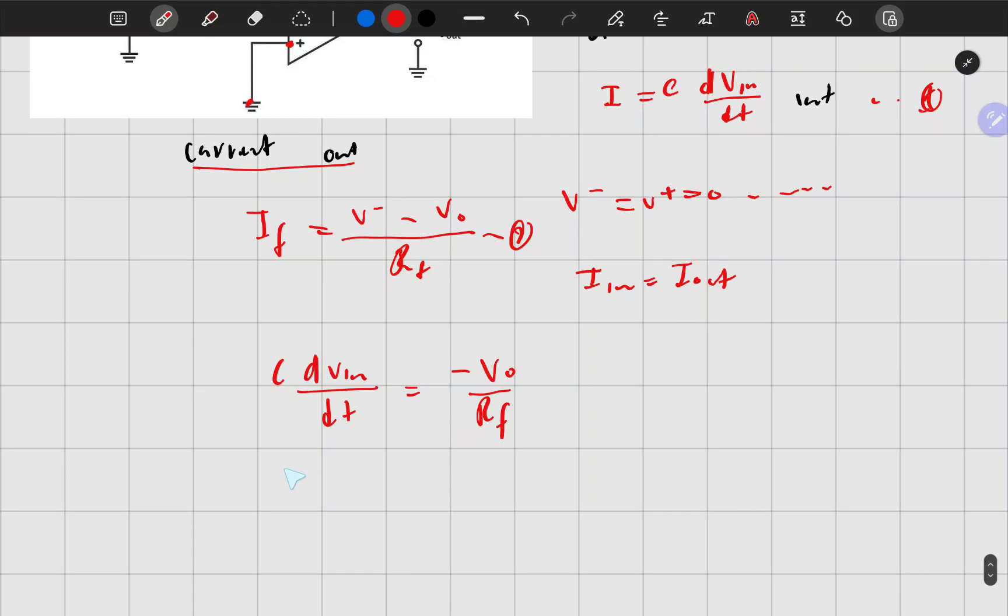You can cross multiply. Let me make this RF negative so it should be easy. Cross multiply to get the final equation with negative RF.